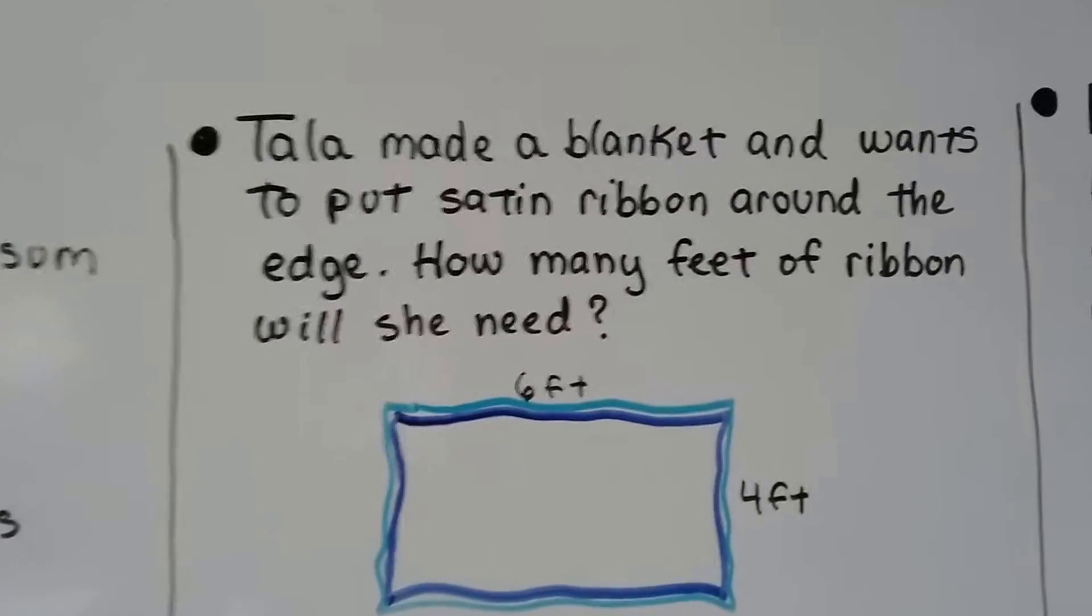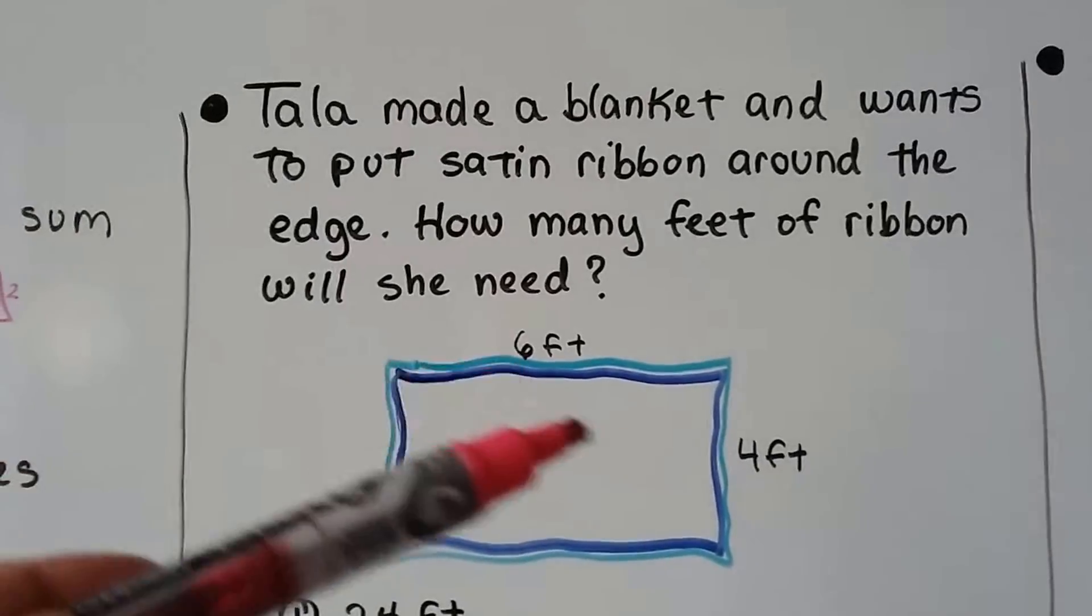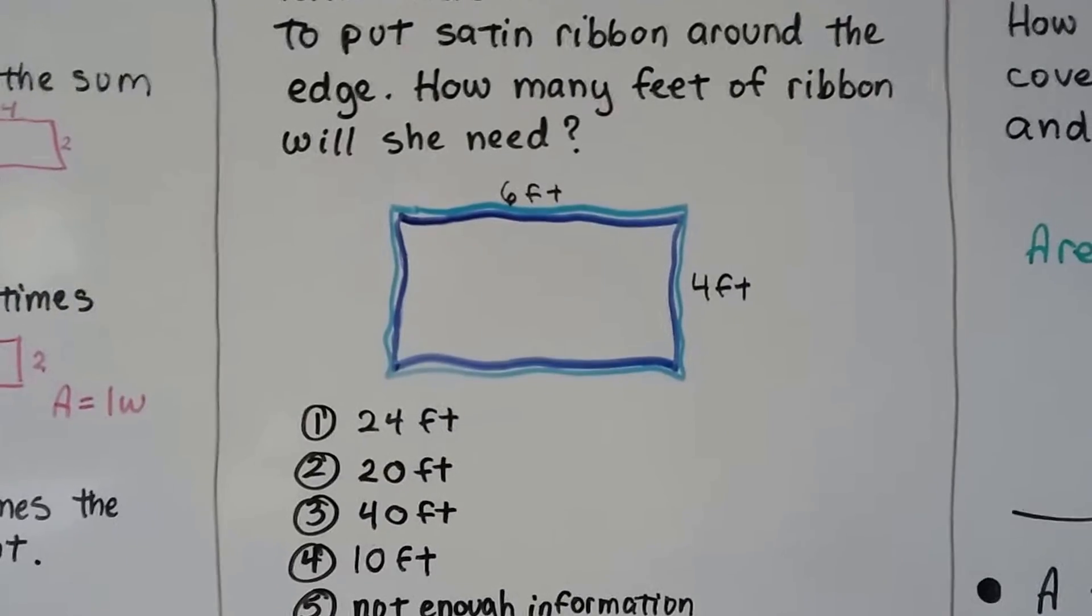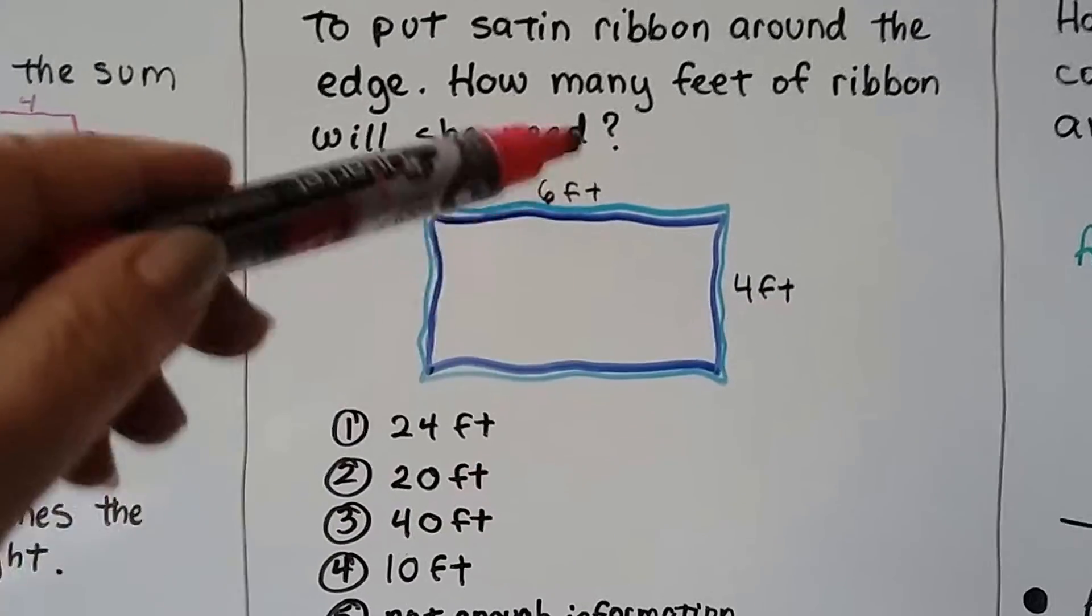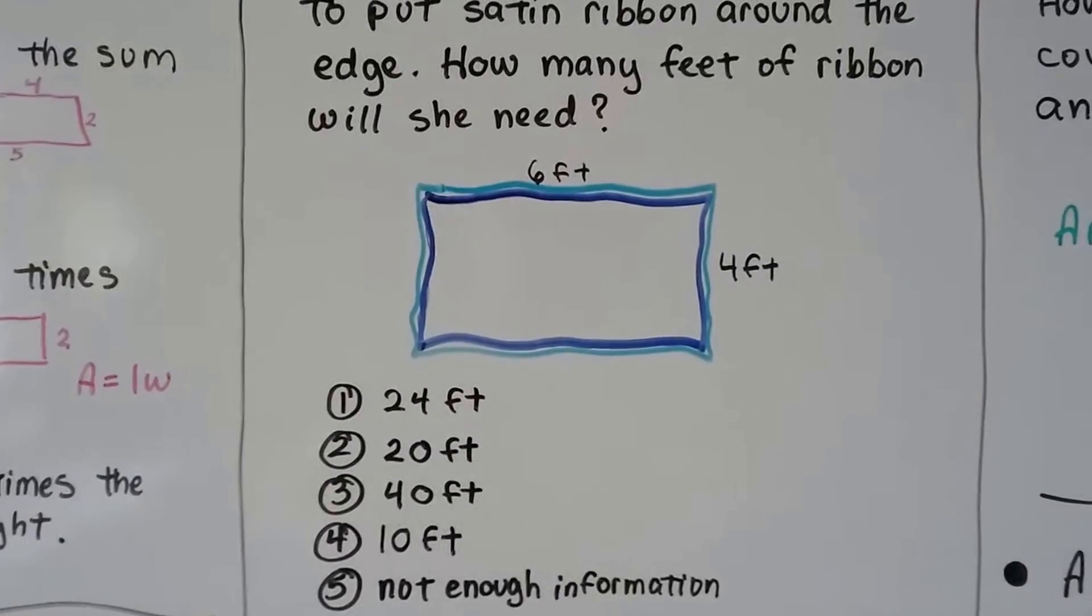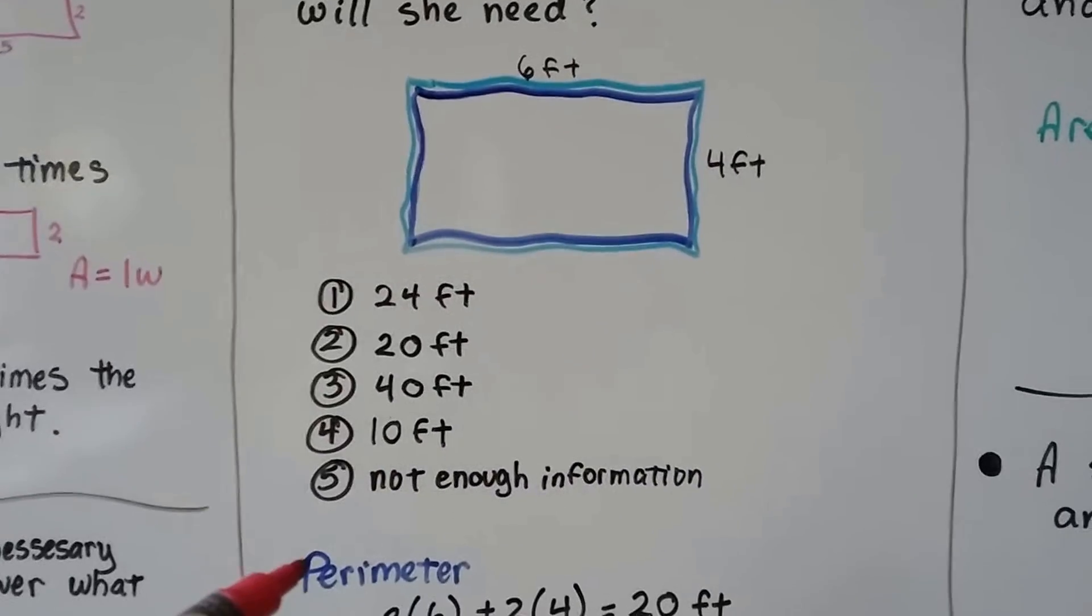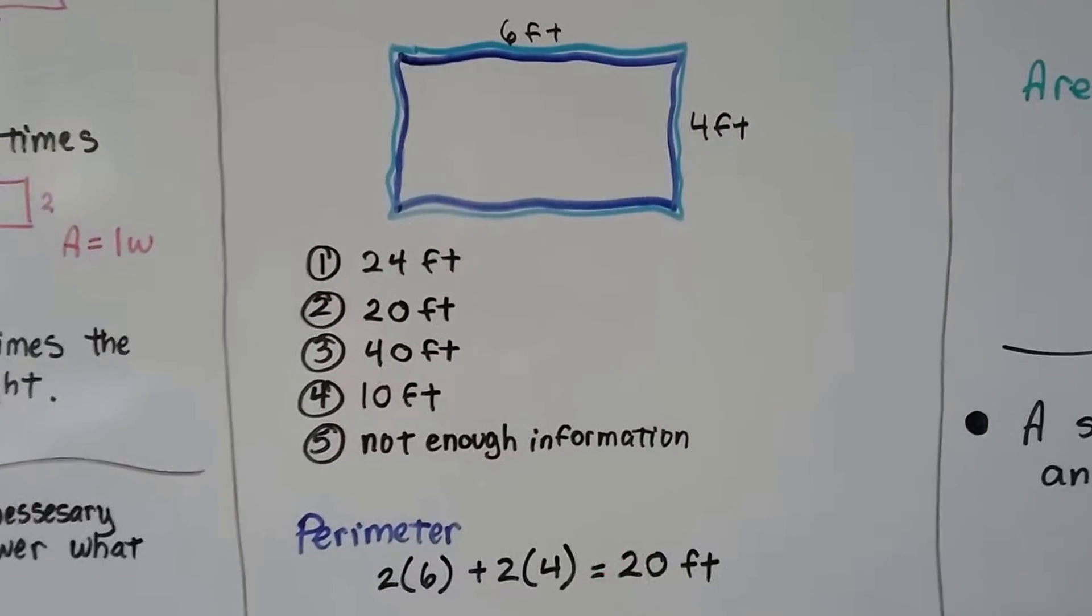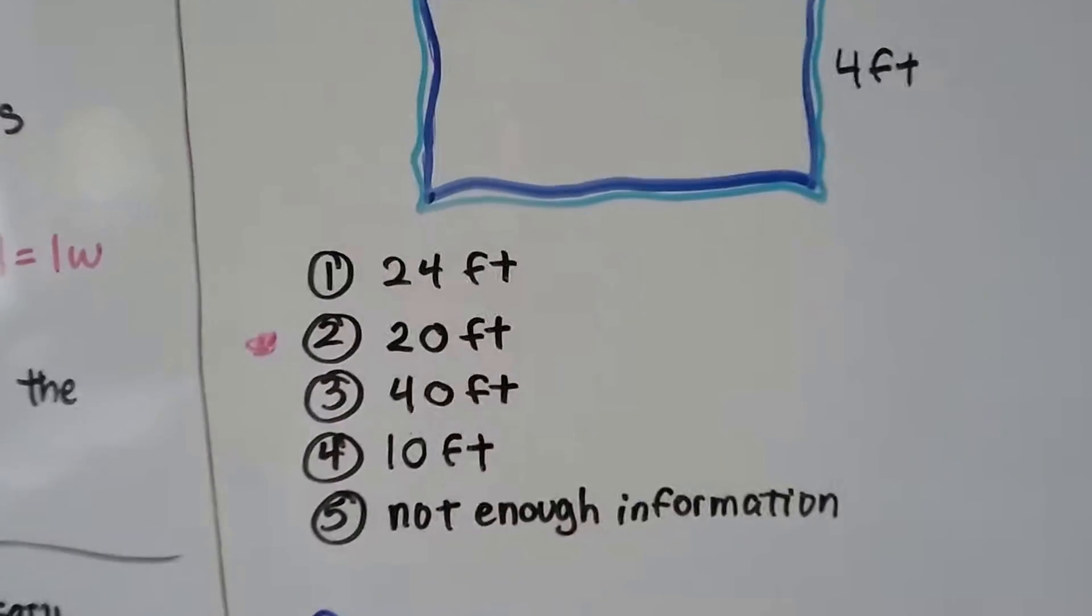Problem 2: blanket and wants to put satin ribbon around the edge. How many feet of ribbon will she need? So it gives us this picture with 6 feet here and 4 feet here, but these two are missing. We know that a rectangle has the same measure on these sides and the same measure on these two sides. So we know that's 6 feet and we know that's 4 feet. We just total it up to figure out how many feet of satin ribbon need to go all the way around. We find the perimeter. We can do 2 times 6 and 2 times 4 and add them together to get 20 feet.